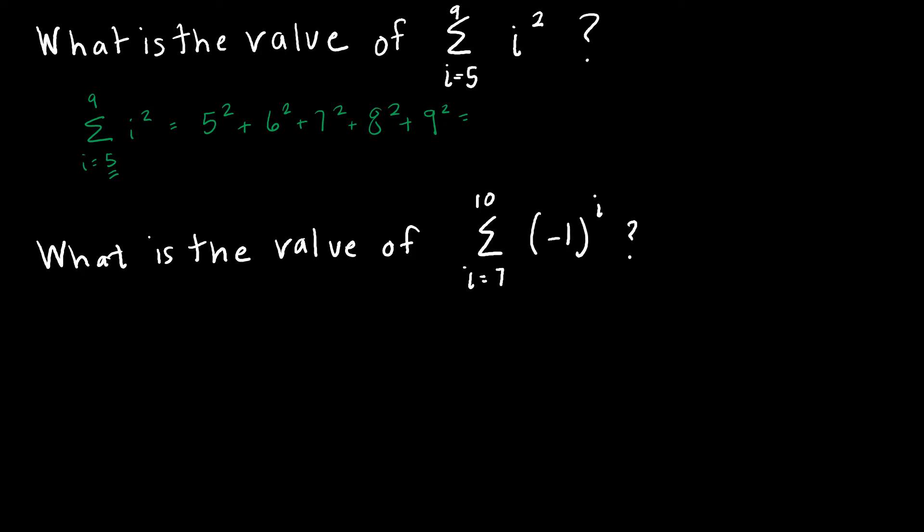So of course that would be 25 plus 36 plus 49 plus 64 plus 81, and then I'm going to add those together to get 255. So when we're asked to find the value, all we're doing is finding the sum by hand essentially.